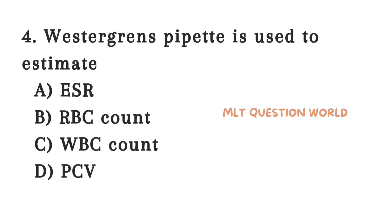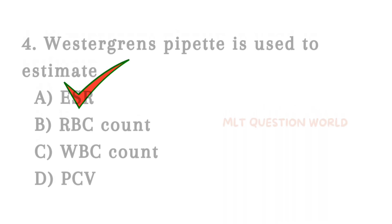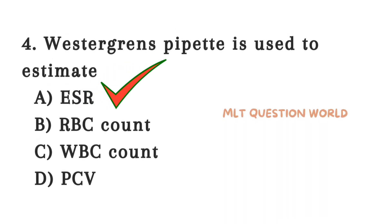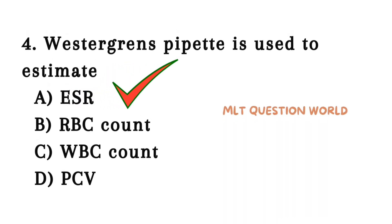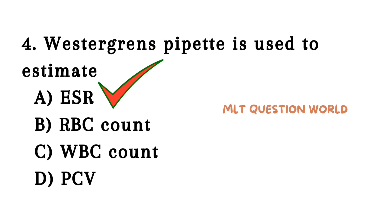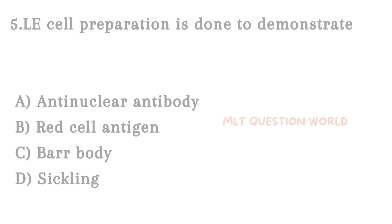Next one. Vestagrin's pipette is used to estimate: Option A. ESR, Option B. RBC count, Option C. WBC count, Option D. PCV. The right answer is ESR — erythrocyte sedimentation rate. Vestagrin's pipette is used for ESR.